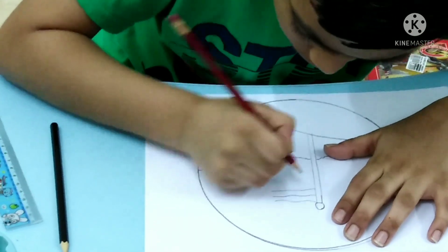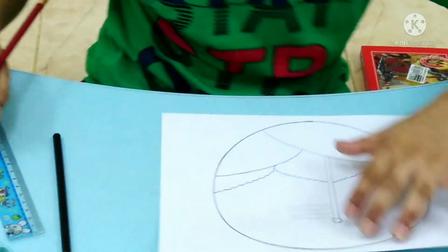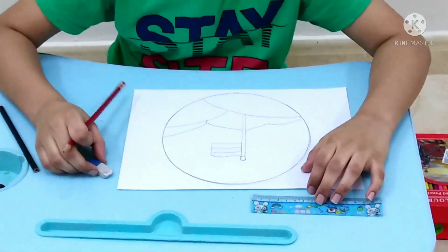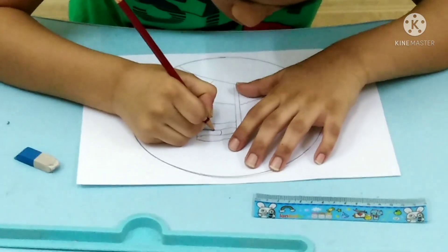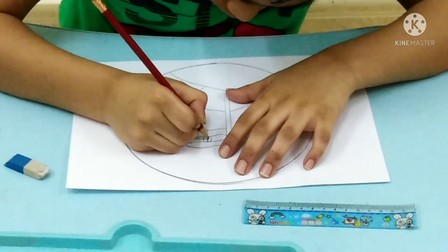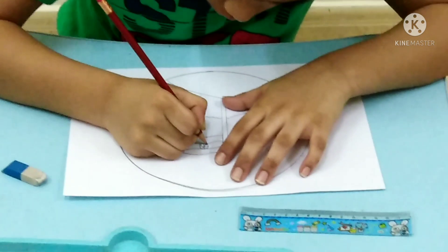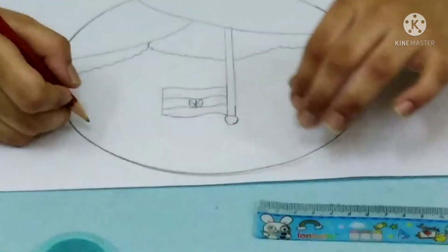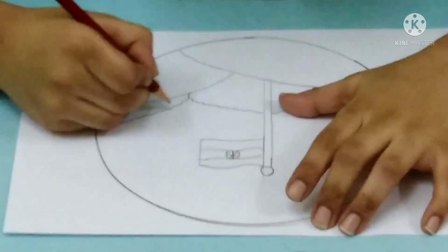Now I am going to draw the flag. I am drawing the flag, now I am going to draw the sun. First we need a circle.